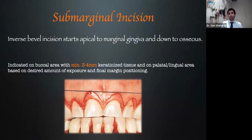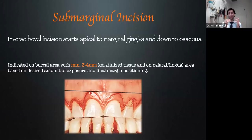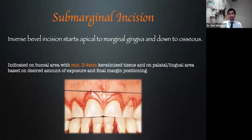The second type — and the primary one for aesthetic cases — is the submarginal incision. The submarginal is an inverse bevel incision: rather than starting at the sulcus at that coronalmost portion, it starts apical to the marginal gingiva. As with any incision, we have to feel the blade touching bone. The submarginal incision is indicated in areas with an adequate or significant amount of keratinized tissue, which explains why in our aesthetic cases with excessive gingival display, this is the incision we go with.